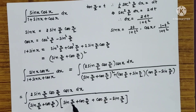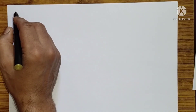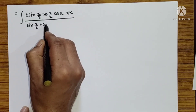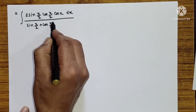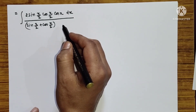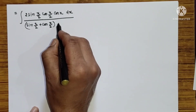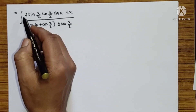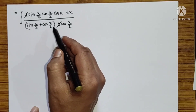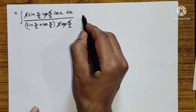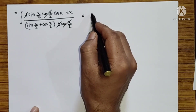After cancellation, sin(x/2) minus sin(x/2) cancels, leaving 2cos(x/2). The 2 and the cos(x/2) terms cancel with corresponding factors, simplifying the expression further.